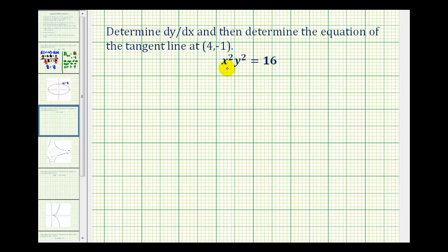So we'll find the derivative of both sides of the equation with respect to x. But when determining the derivative of x squared times y squared, we're going to have to apply the product rule.